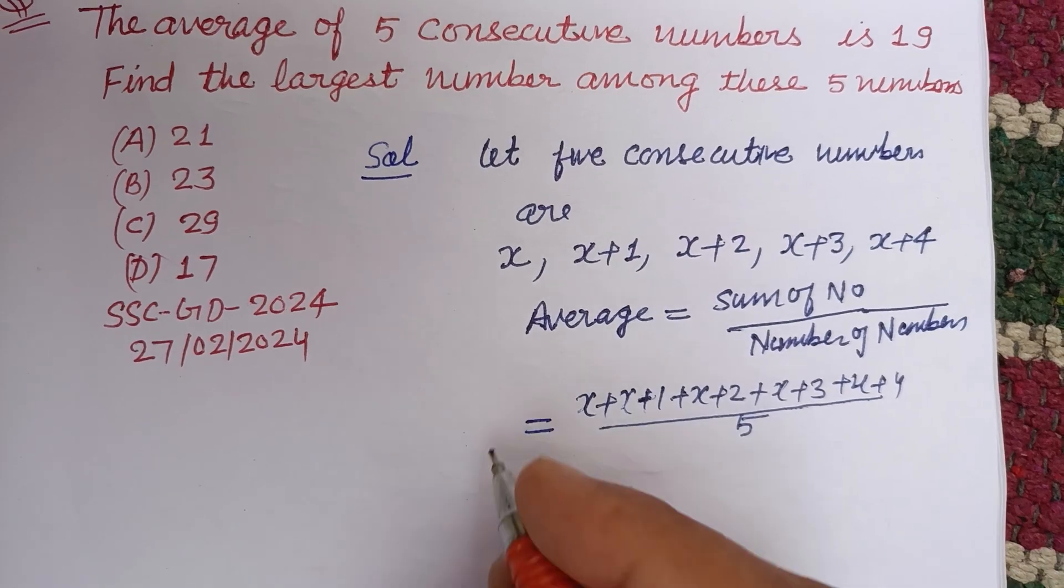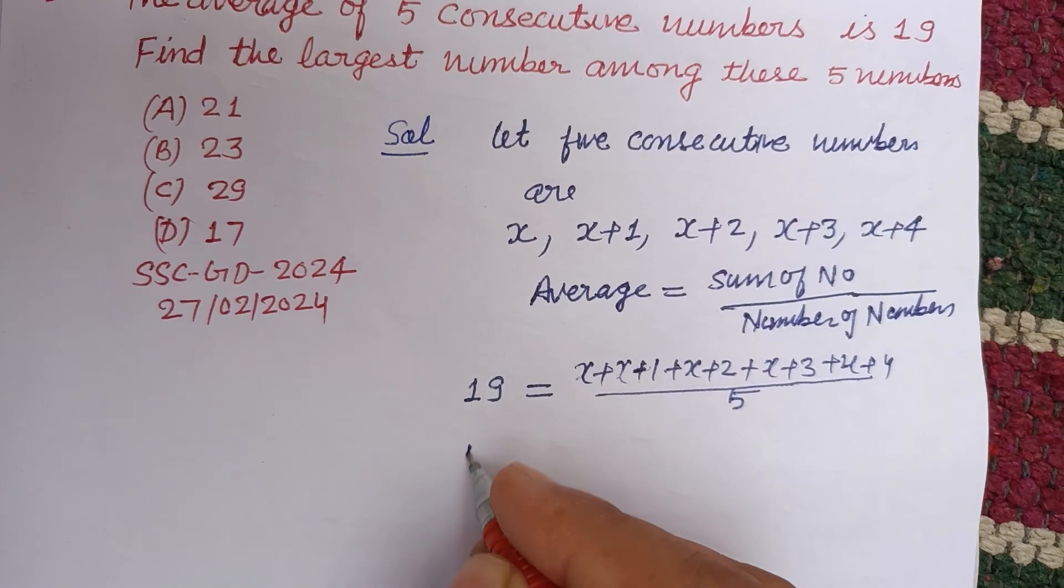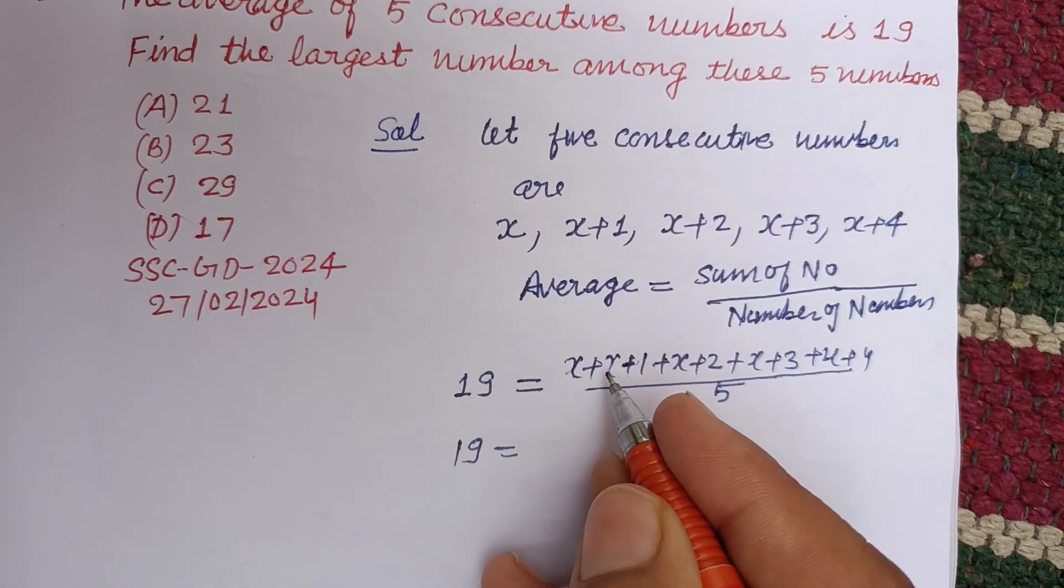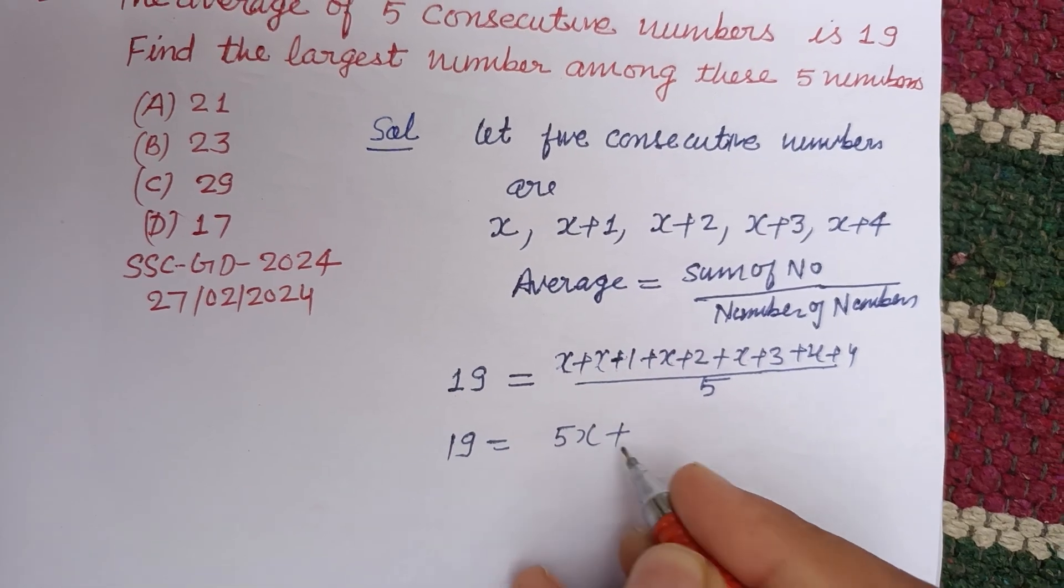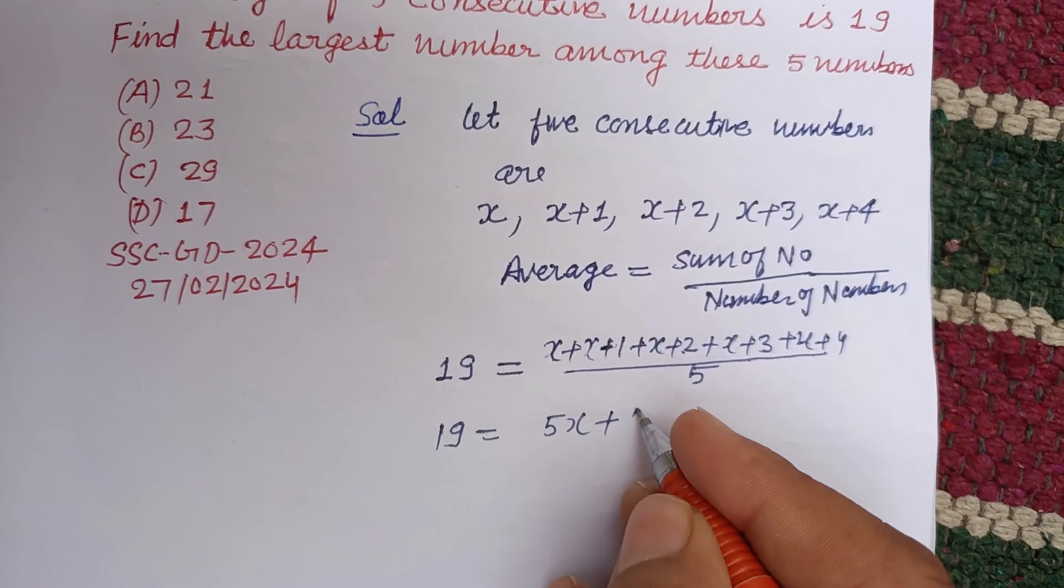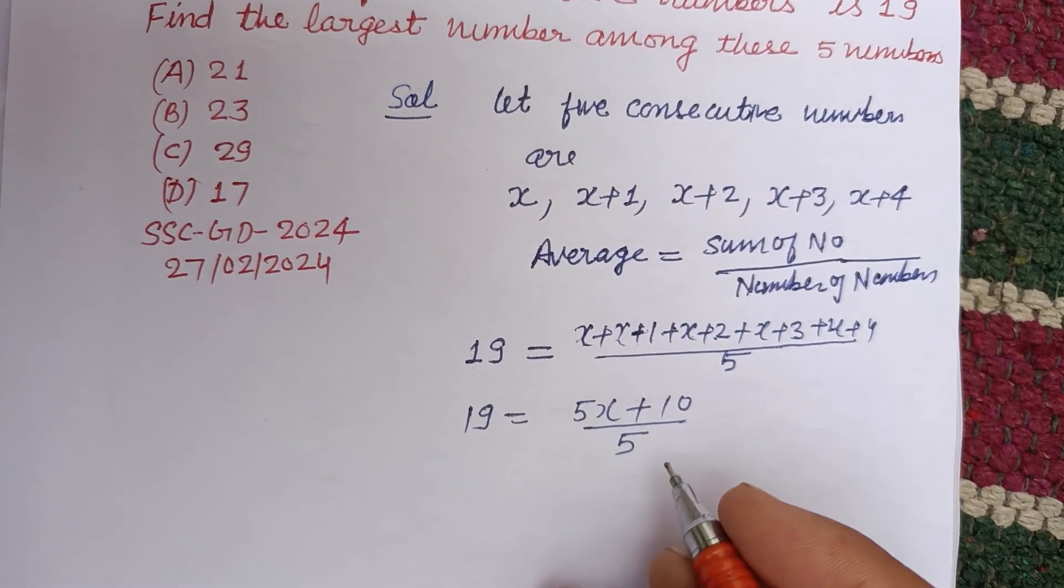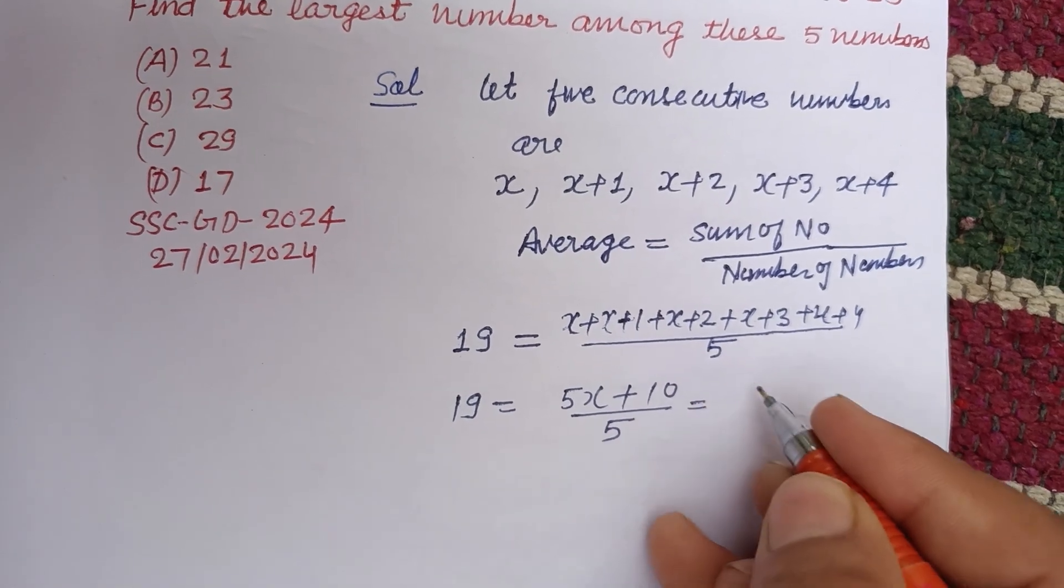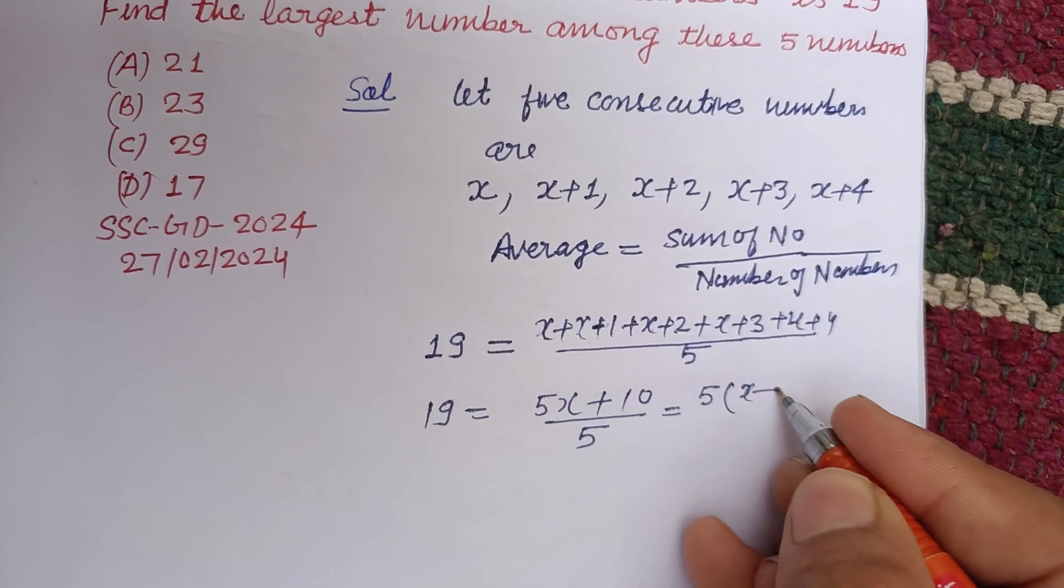So 19 equals 5x plus 10 over 5. This 5 is common in the numerator, so we have 5 times x plus 2 over 5.